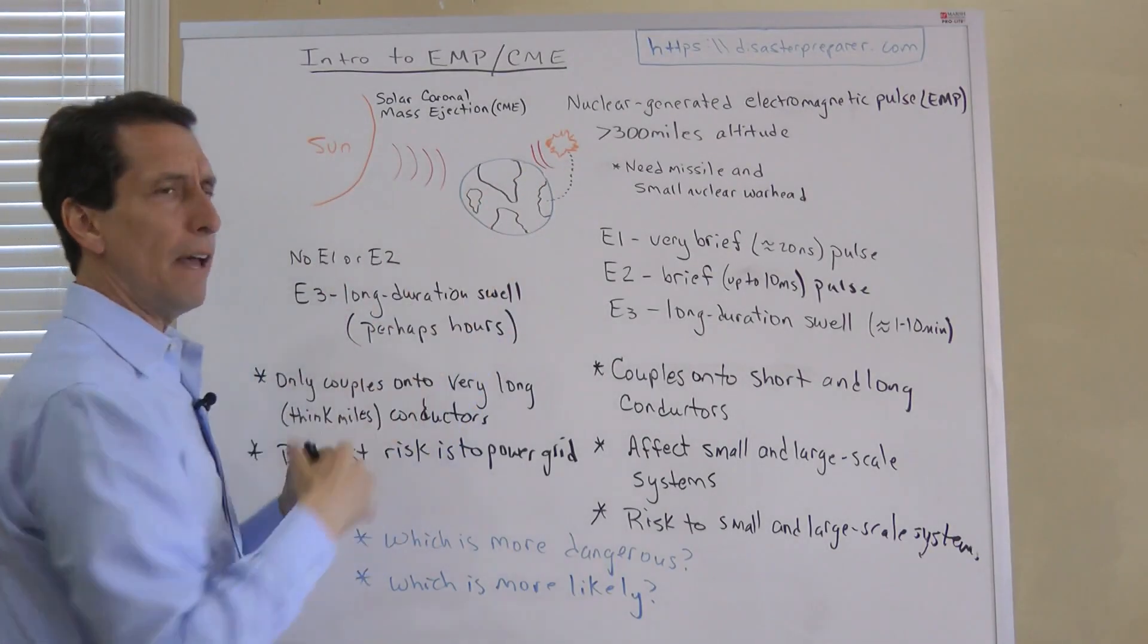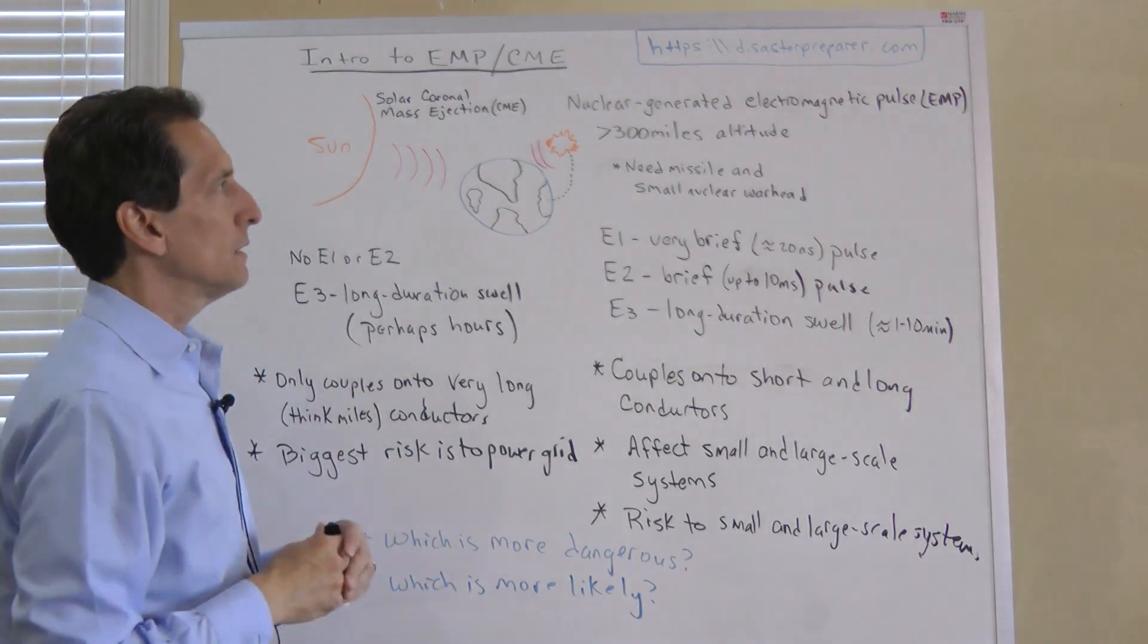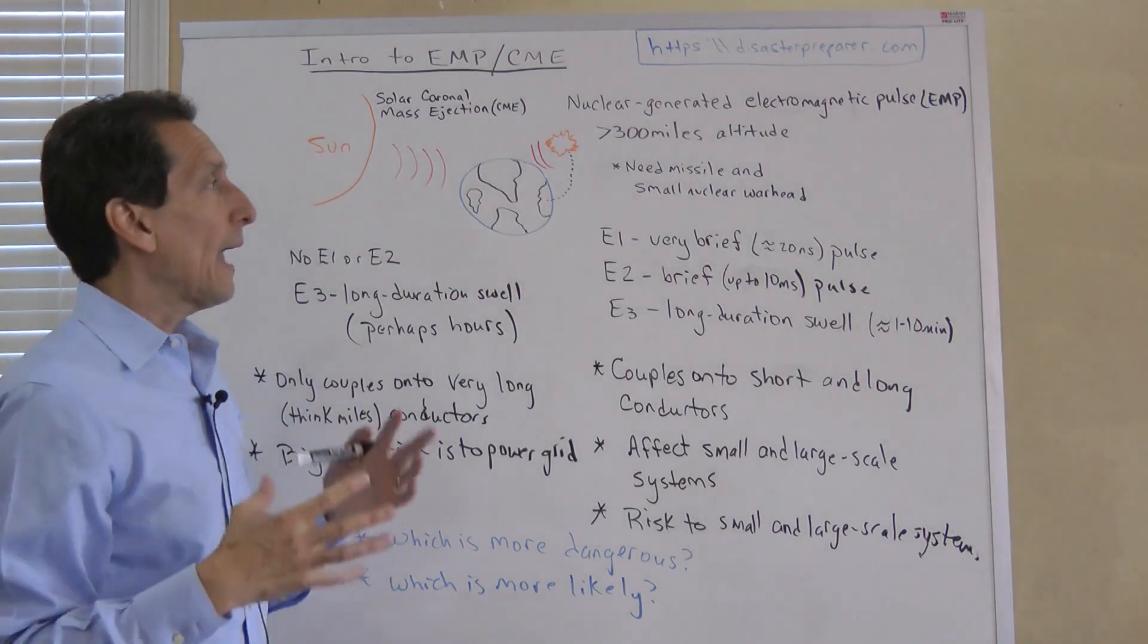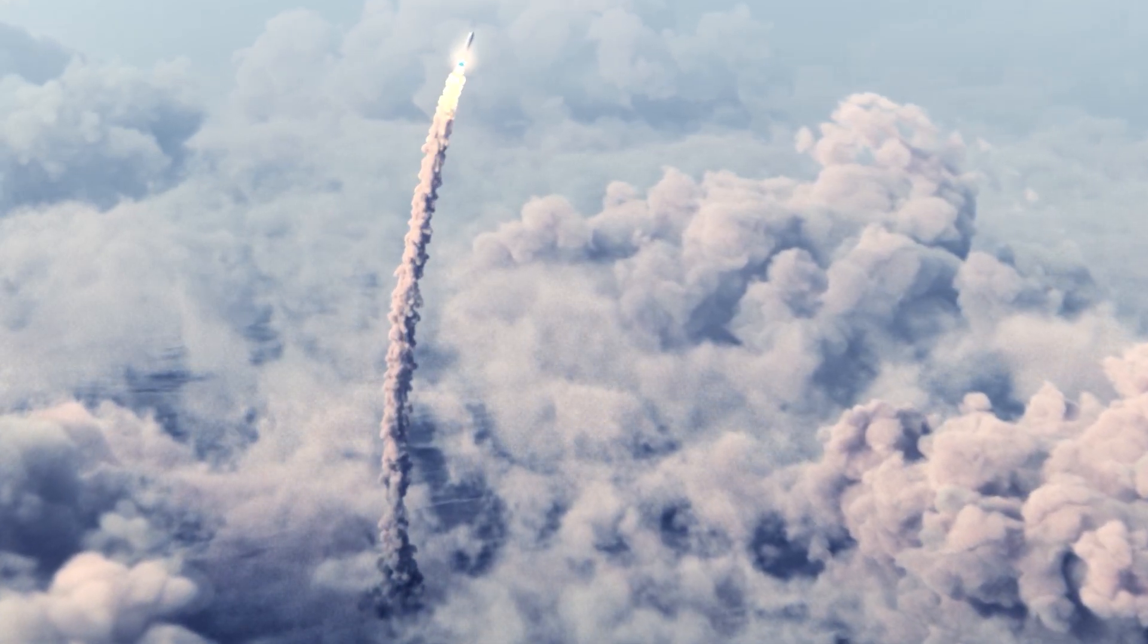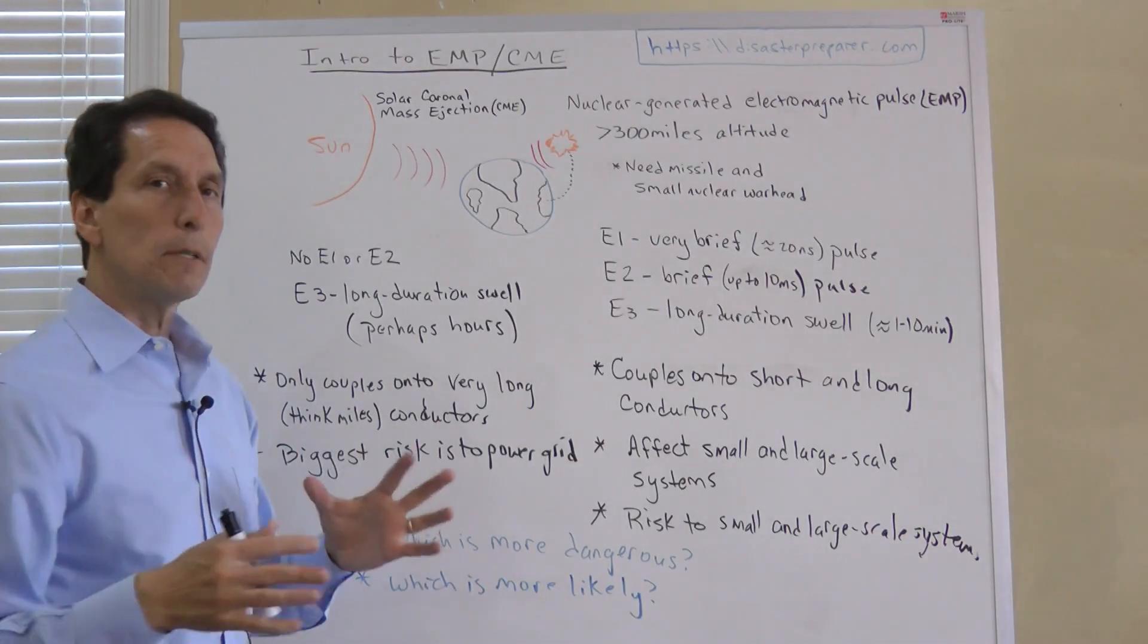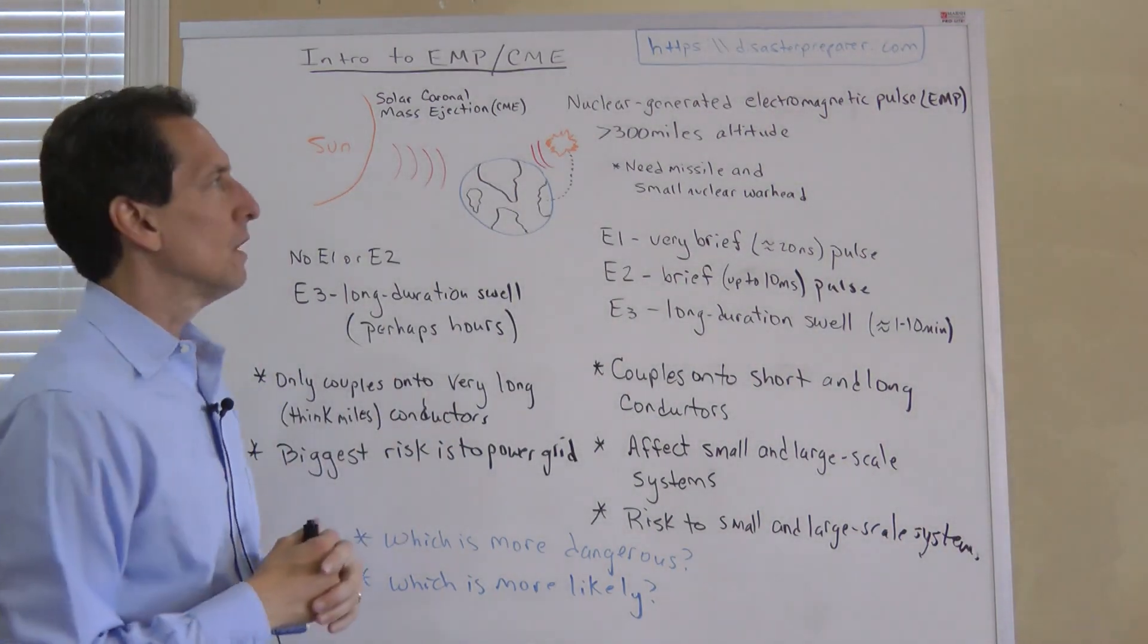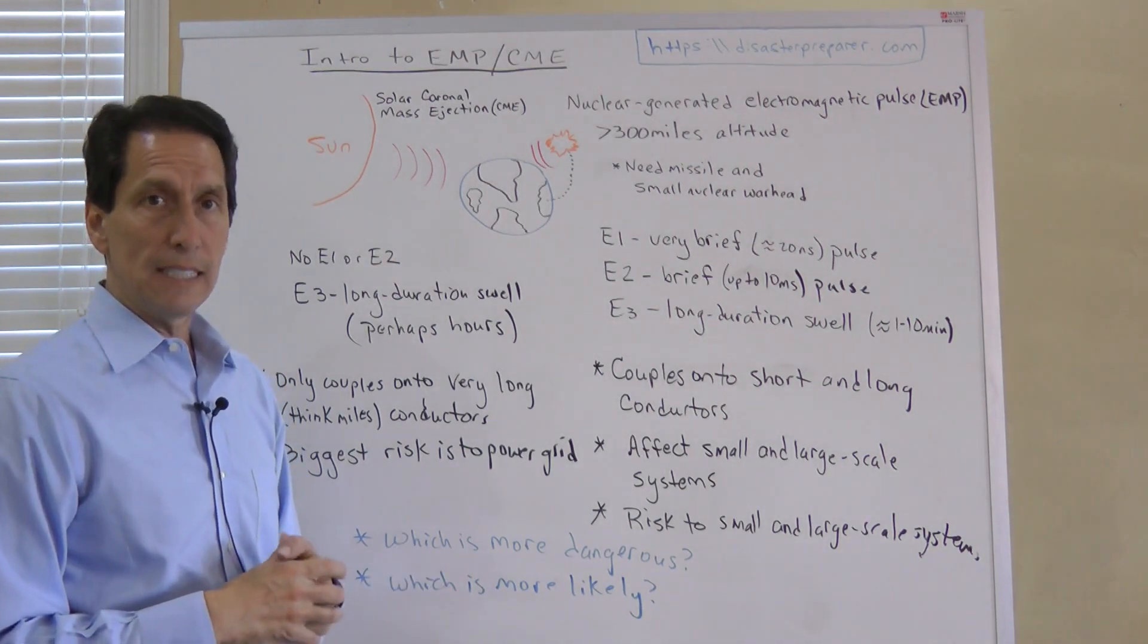What do you need to create a high-altitude nuclear EMP? You need a missile system that can get up that high and carry a nuclear warhead, and then the nuclear warhead itself. Some are designed to generate more electromagnetic disturbances than others, so it could be optimized to give you even higher field levels at the surface. Do these things exist? A lot of people question if EMPs are real. They certainly are real. They've been demonstrated for the last 60 years or so.